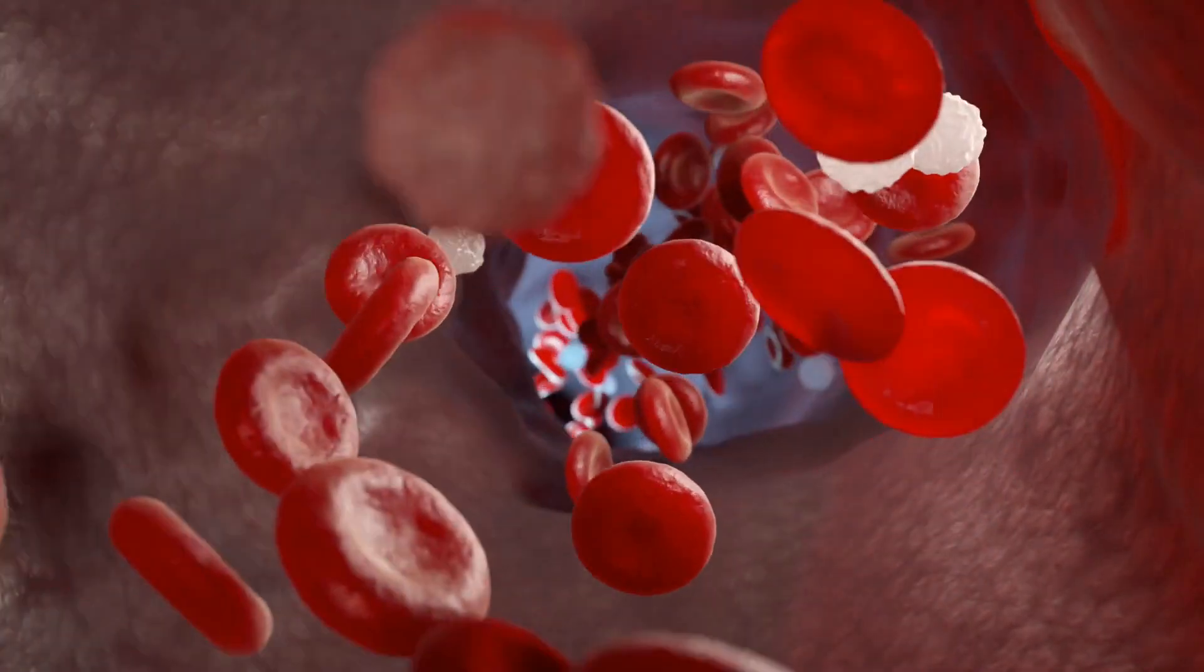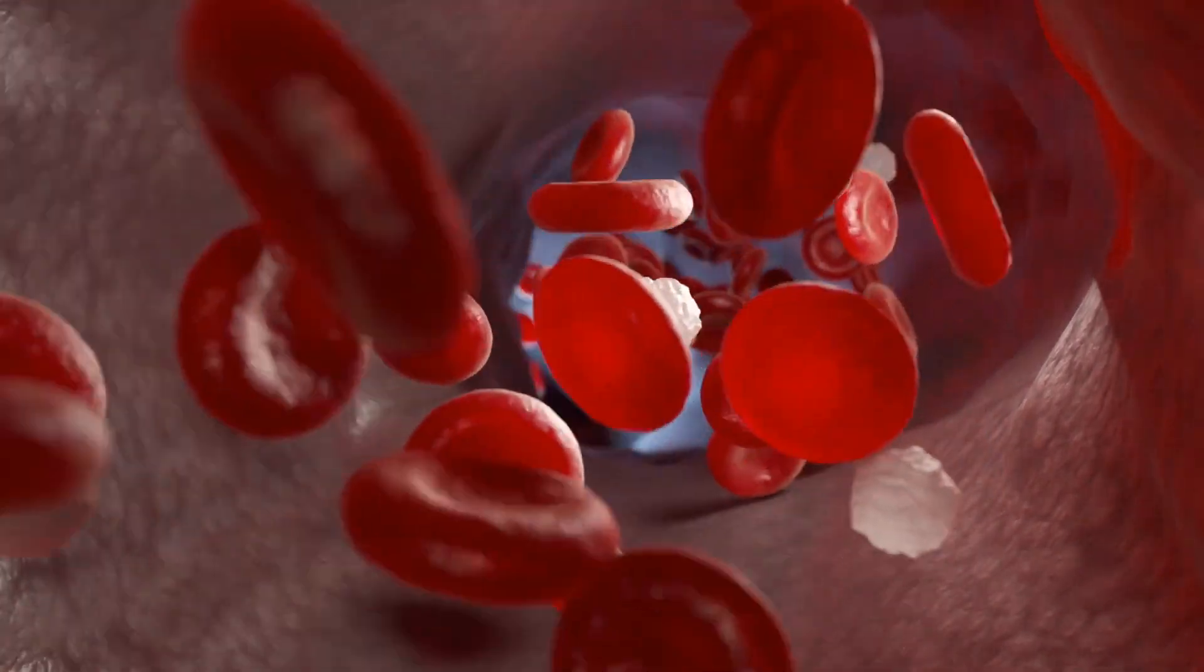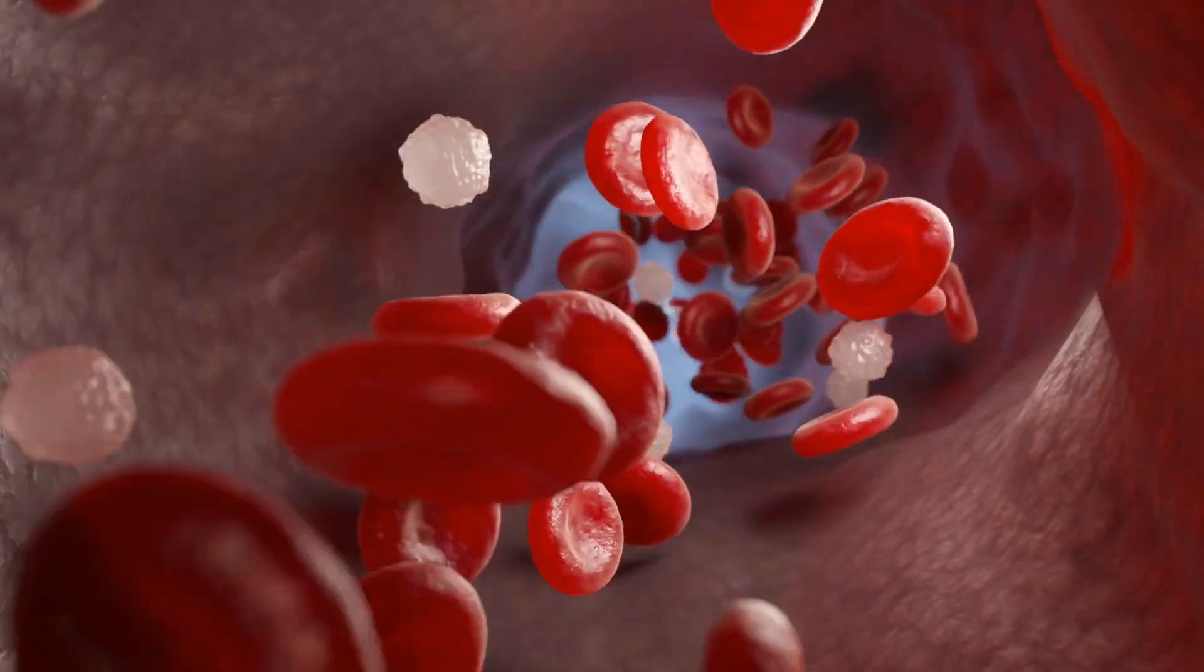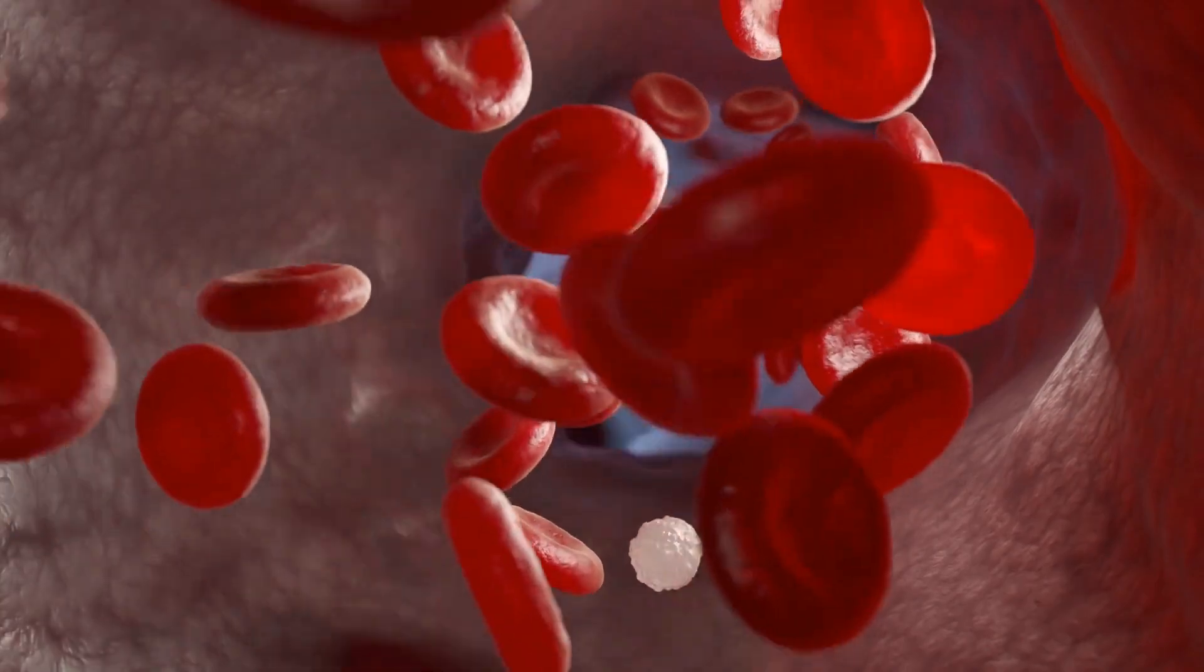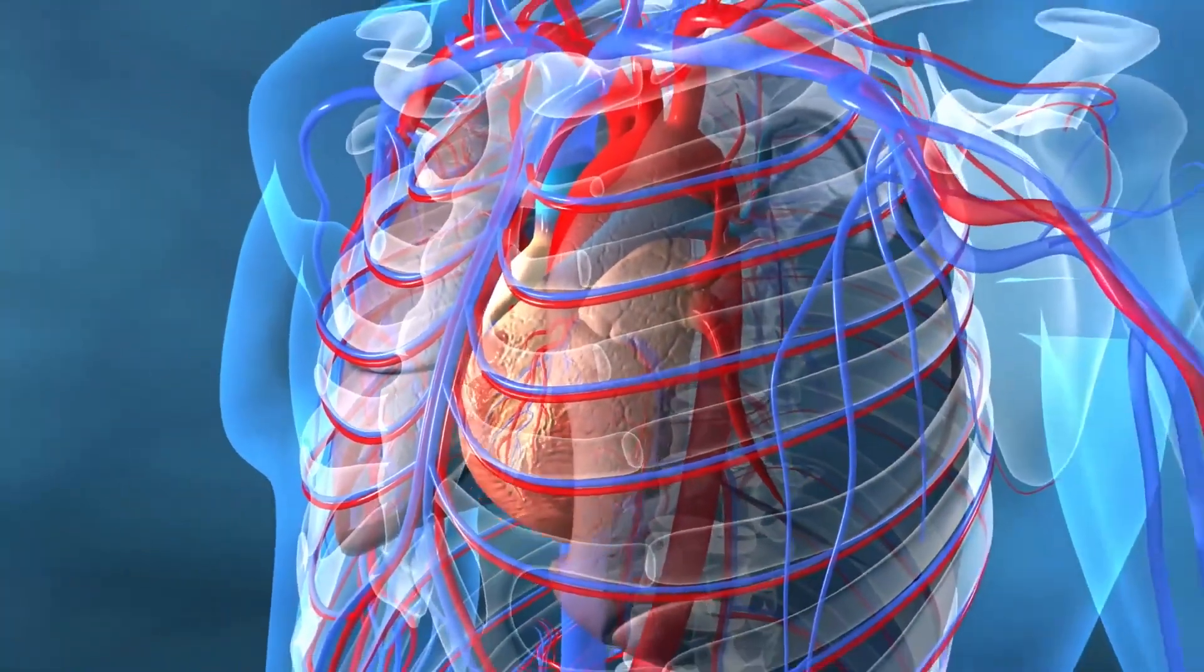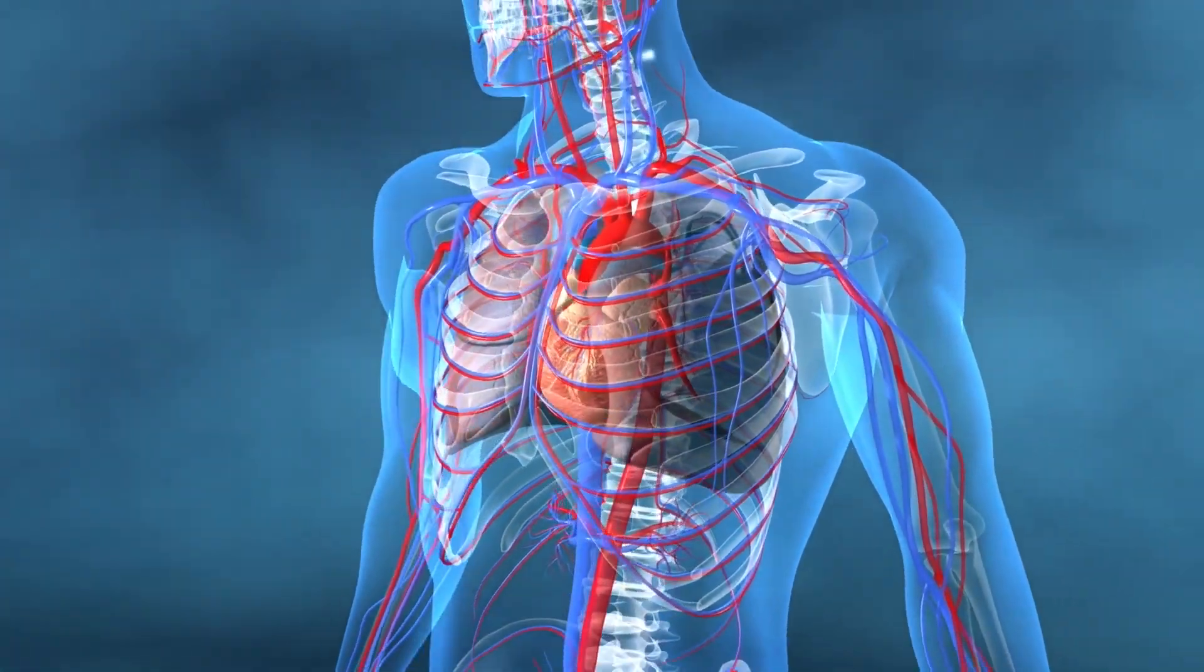Cells that eventually become T cells travel from the bone marrow to the thymus by way of our bloodstream where they mature, hence the name T cell. The thymus is located just above the heart, behind the sternum or breastbone.